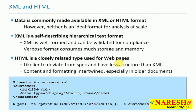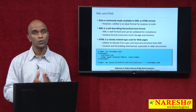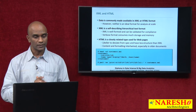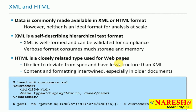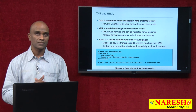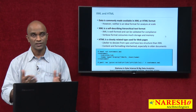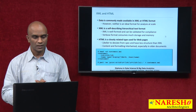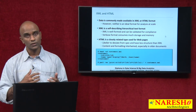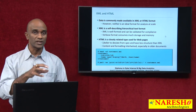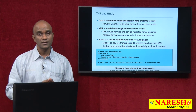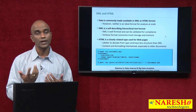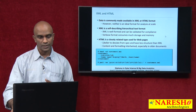Verbose format consumes much more storage and memory. When storage and memory increase, would you buy a high-powered server or use commodity servers with something like Hadoop? HTML is a closely related type for web pages — it is more likely to deviate from spec and have less structure than XML. Some web pages may or may not have well-formed HTML, and content and formatting can be intertwined, especially in older documents. The more we deal with XML or HTML documents, the more complicated text extraction can get. Tools such as Python provide ways of scraping text out of them for further analysis.